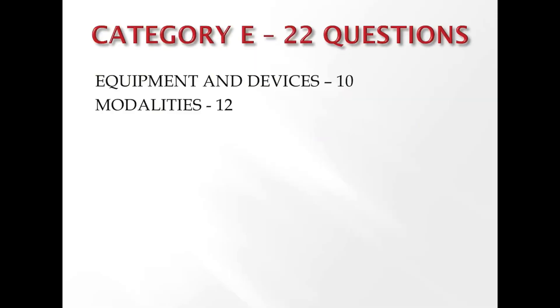Category E is all about equipment, devices, and modalities for pediatric and adult populations. A total of 22 questions are asked, representing 11% of the NPTE examination. This category asks about all the modalities and equipment used for different patient conditions, with questions divided according to different conditions. There are no specific subcategories given for this category.